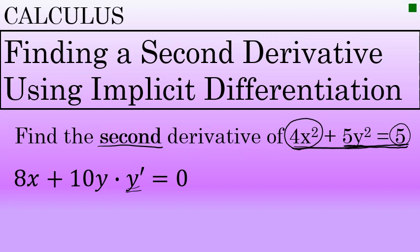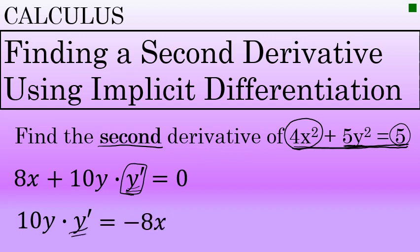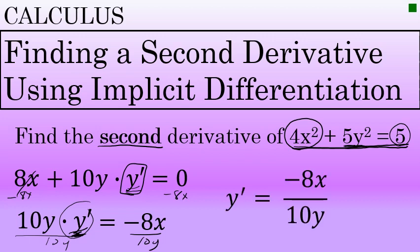Now we're solving for y prime. We have two steps to complete the first derivative. The first step is to subtract 8x from both sides, leaving 10y times y prime equals negative 8x. Then, to isolate y prime, we divide both sides by 10y. That leaves negative 8x over 10y. Since 8 and 10 are both divisible by 2, the first derivative is negative 4x over 5y.